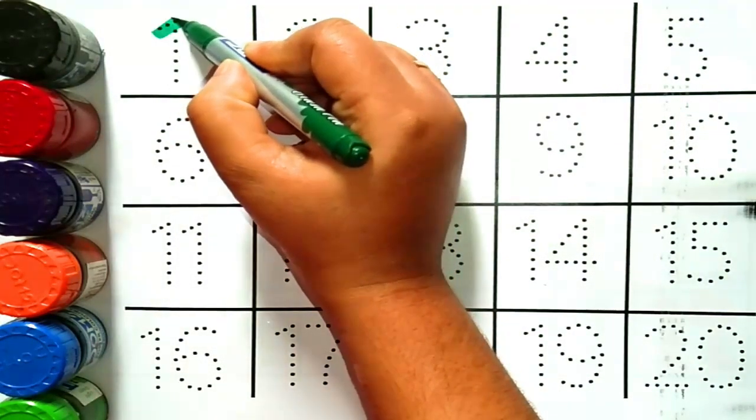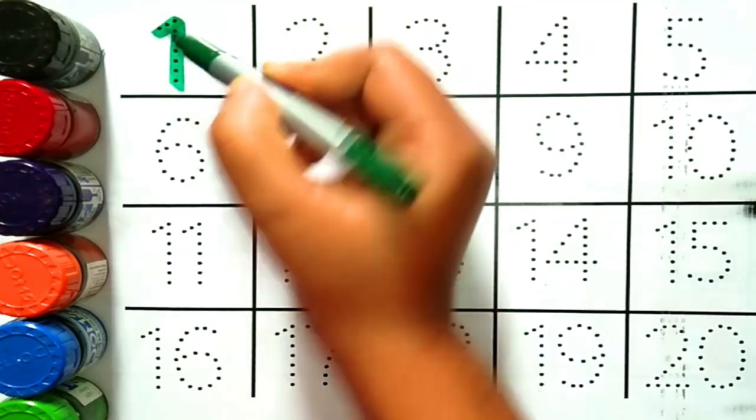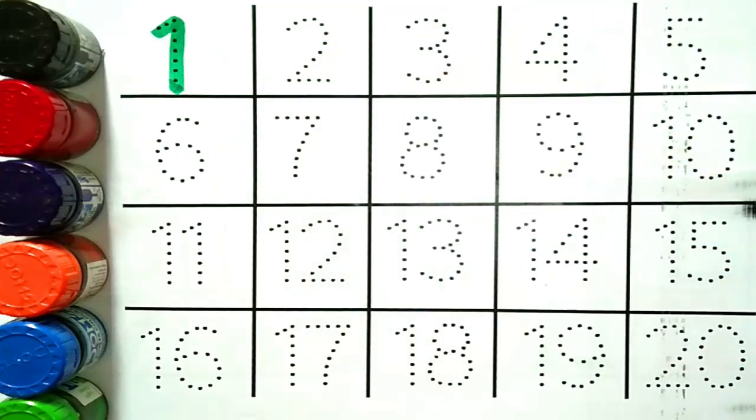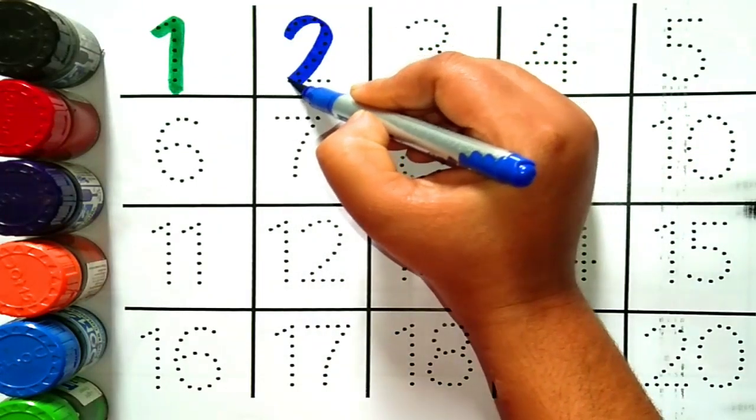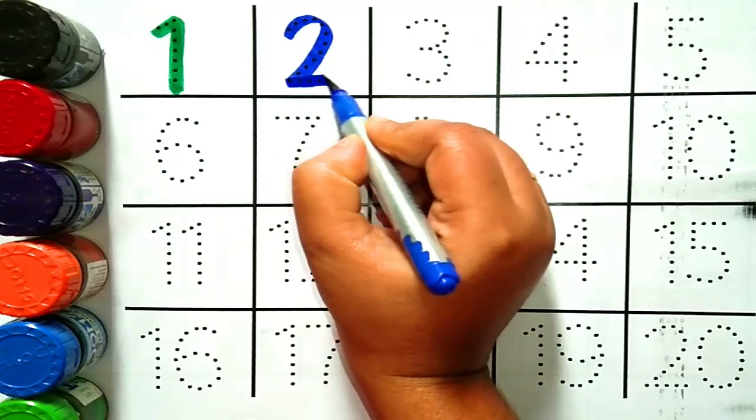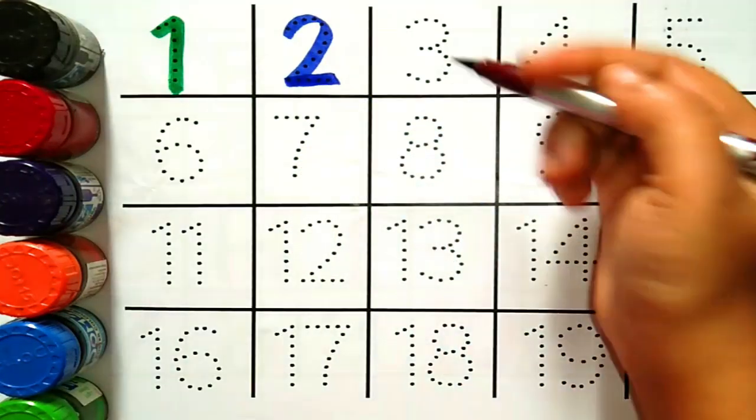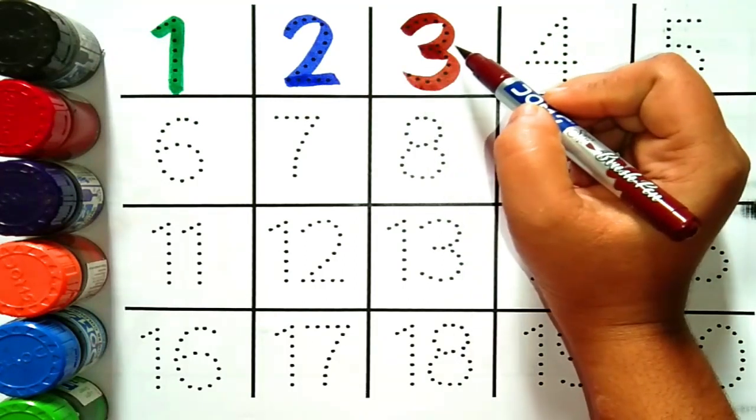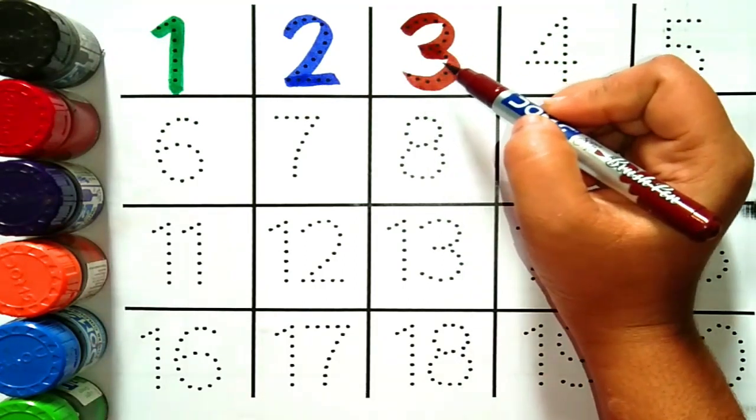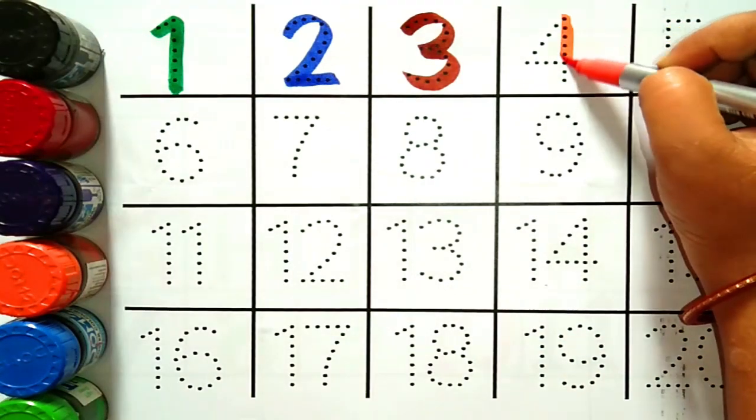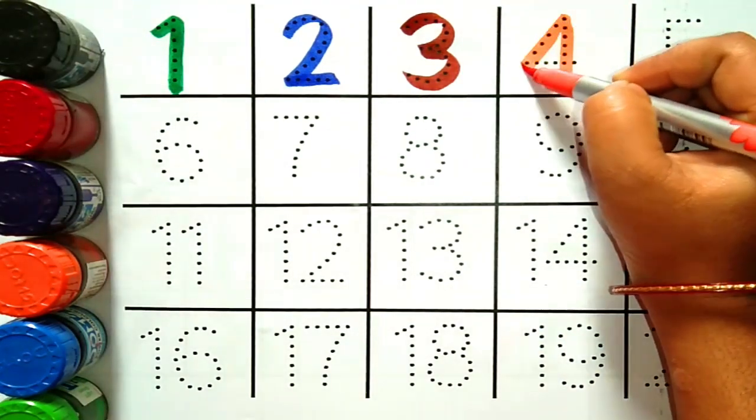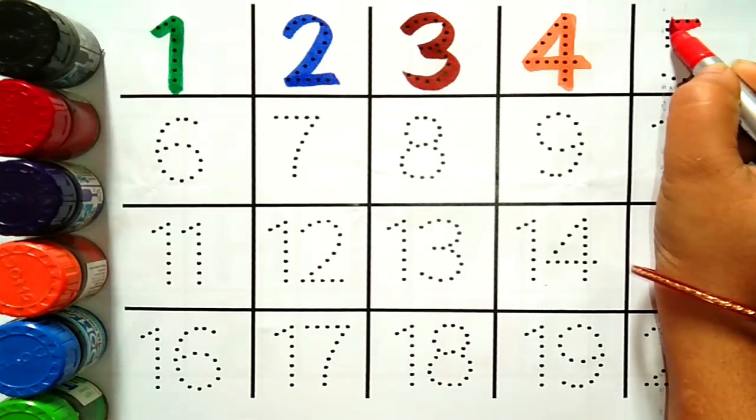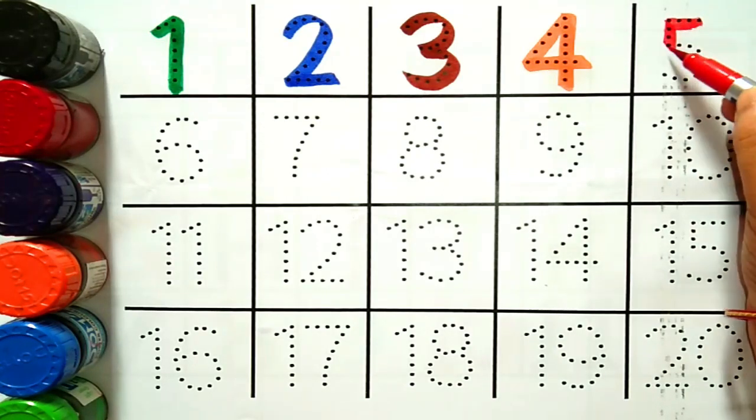One, Yeh Hai Number One. Two, Yeh Hai Number Two. Three, Yeh Hai Number Three. Four, Yeh Hai Number Four. Five, Yeh Hai Number Five.